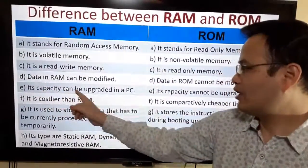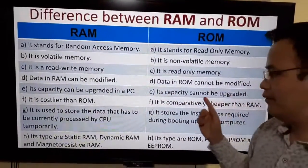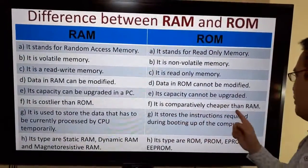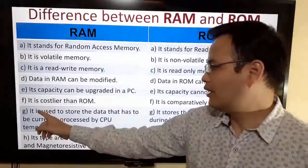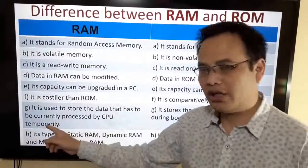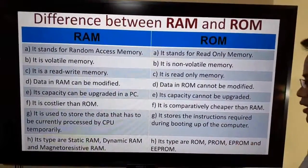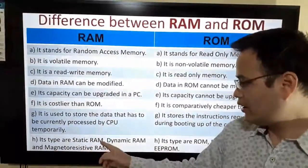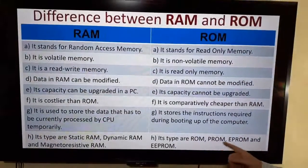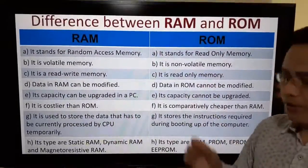RAM's capacity can be upgraded in a PC, whereas ROM's capacity cannot be upgraded. RAM is costlier than ROM, which is comparatively cheaper. RAM is used to store data that is currently being processed by the CPU temporarily, while ROM stores the instructions required during booting of the computer. Types of RAM include Static RAM, Dynamic RAM, and Magnetoresistive RAM. Types of ROM include PROM, EPROM, and EEPROM.